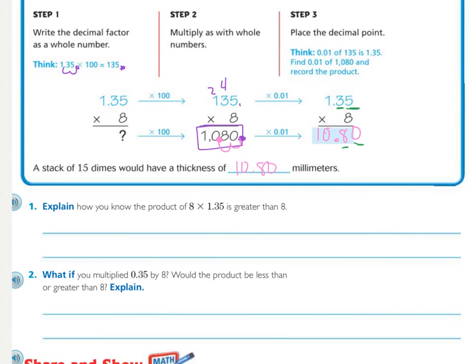So, now, looking at number one, explain how you know the product of 8 times 1 in 35 hundredths is greater than 8. Why do we know that this is going to be larger than 8? Thinking back on just basic multiplication facts that I know, I know that 8 times 1 equals 8. And I know that 1 in 35 hundredths is greater than 1. We know that 1 in 35 hundredths is greater than 1. Therefore, my product or my answer multiplying 1 in 35 hundredths is going to be greater than 8.